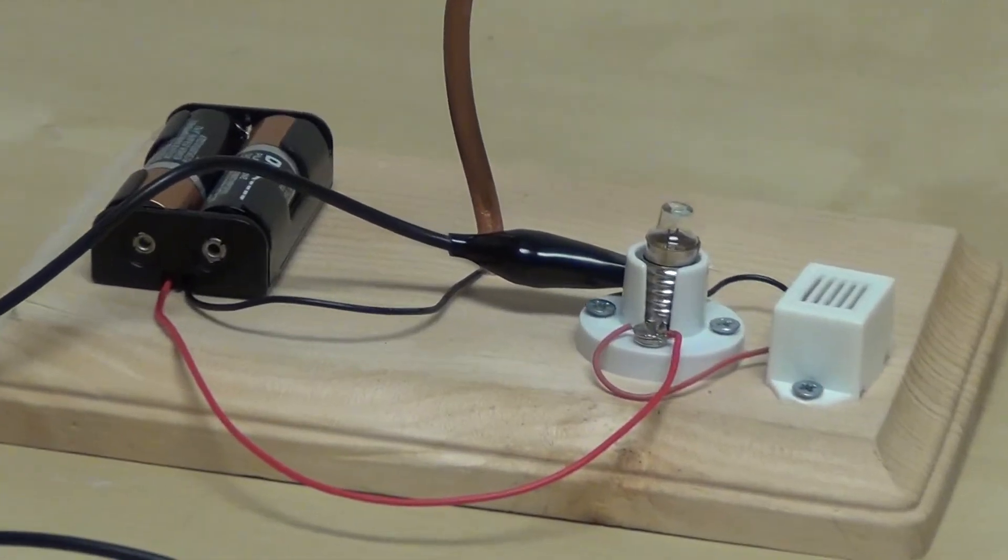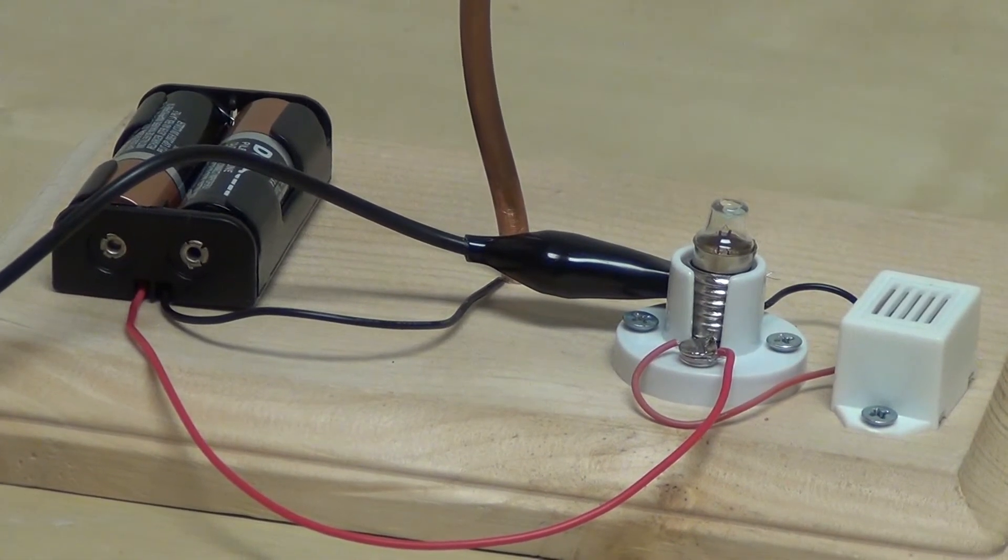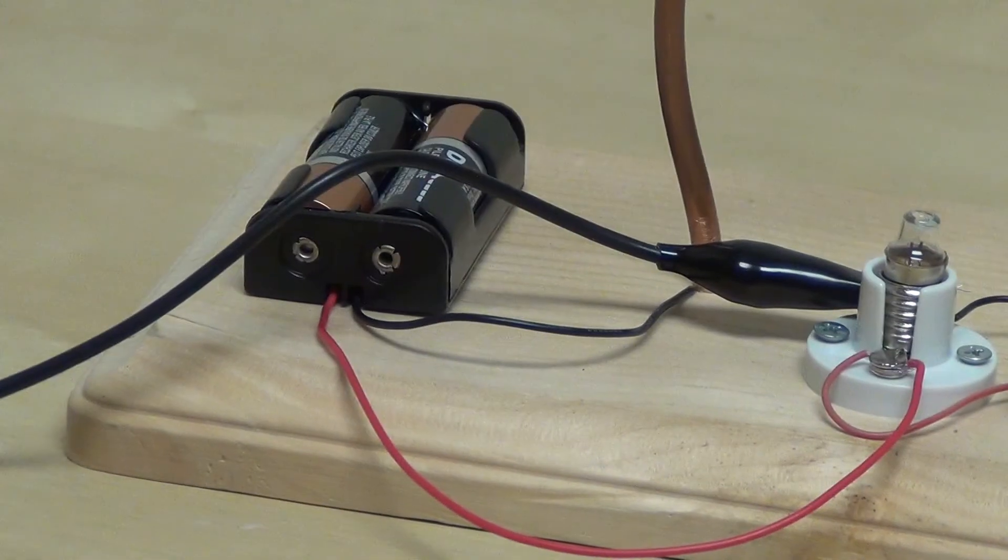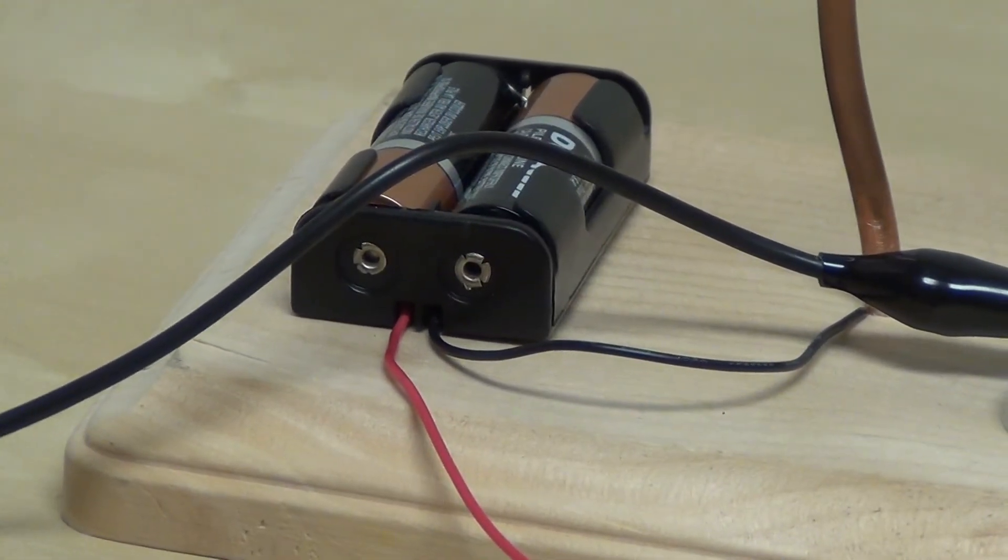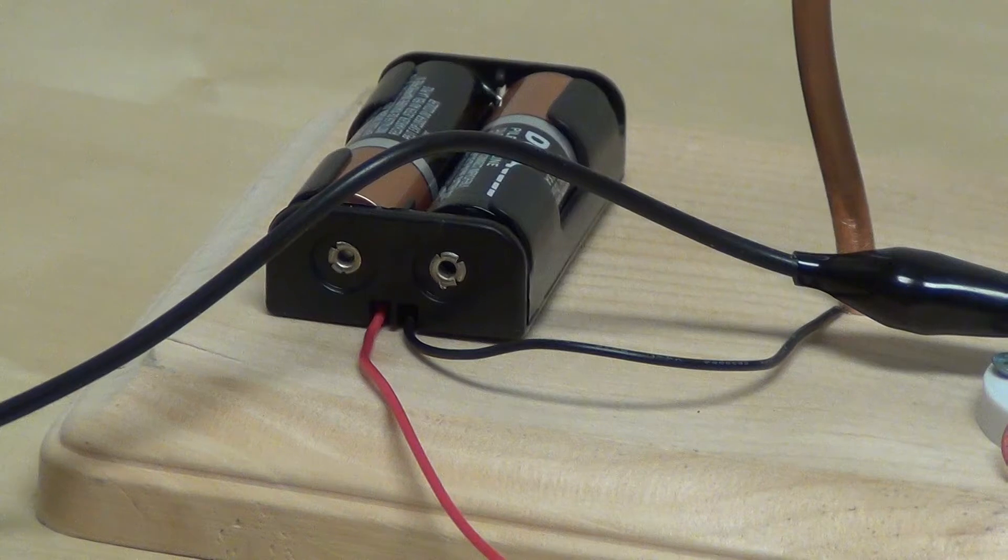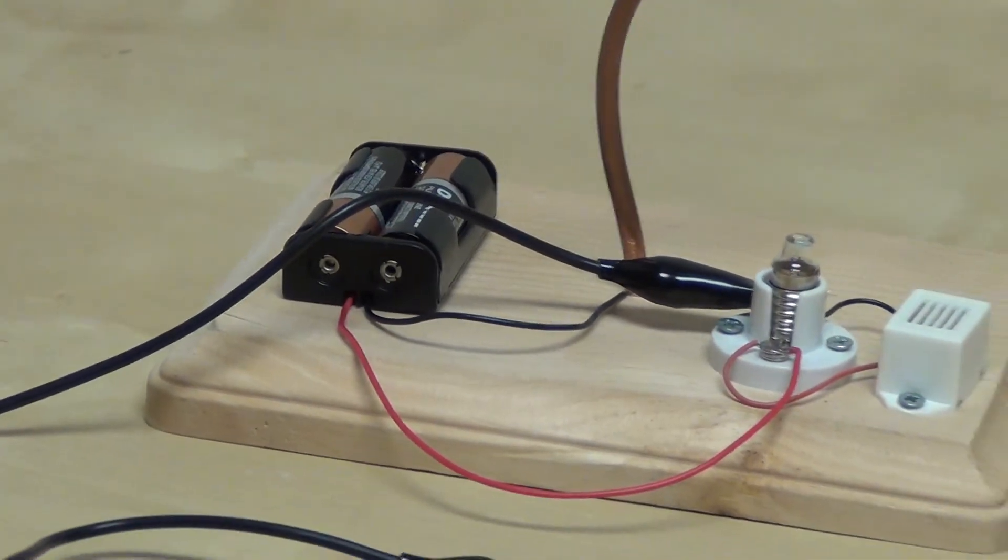As you can see, the lamp holder is holding a 2 volt bulb, and here we have a battery holder and two AA batteries inside. The batteries are not included, so you'll have to buy those, but everything else you see here is included.